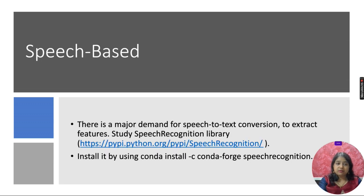Speech-based recognition. The major demand for speech-to-text conversion is to extract features. That means when we speak, it will try to extract the text from our speech. For this, we also need the speech recognition library. We can install it by writing the command conda install and we'll install the speech recognition library.